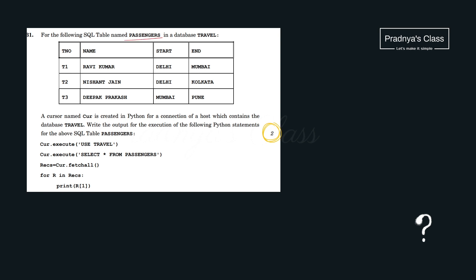There is a table named 'passenger' and records are stored in it. From the code, we can understand that a connection has been established. Using 'USE travel', the database is being selected. Using a SELECT query, all records are extracted with the fetchall command, and then printed one by one using a for loop. When we print records one by one, we get them in the form of tuples — let's consider the first record in the form of a tuple.